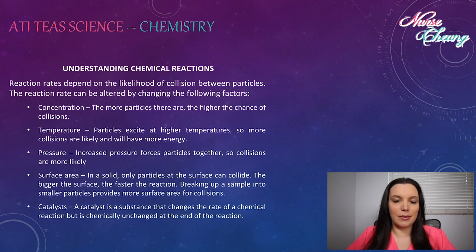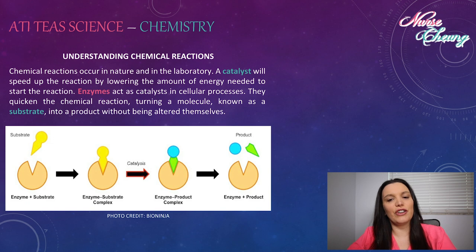And catalysts. A catalyst is a substance that changes the rate of a chemical reaction but is chemically unchanged at the end of the reaction. Chemical reactions occur in nature and in the laboratory. A catalyst will speed up the reaction by lowering the amount of energy needed to start that reaction. Enzymes act as catalysts in cellular processes. They quicken the chemical reaction, turning a molecule known as a substrate into a product without being altered themselves.